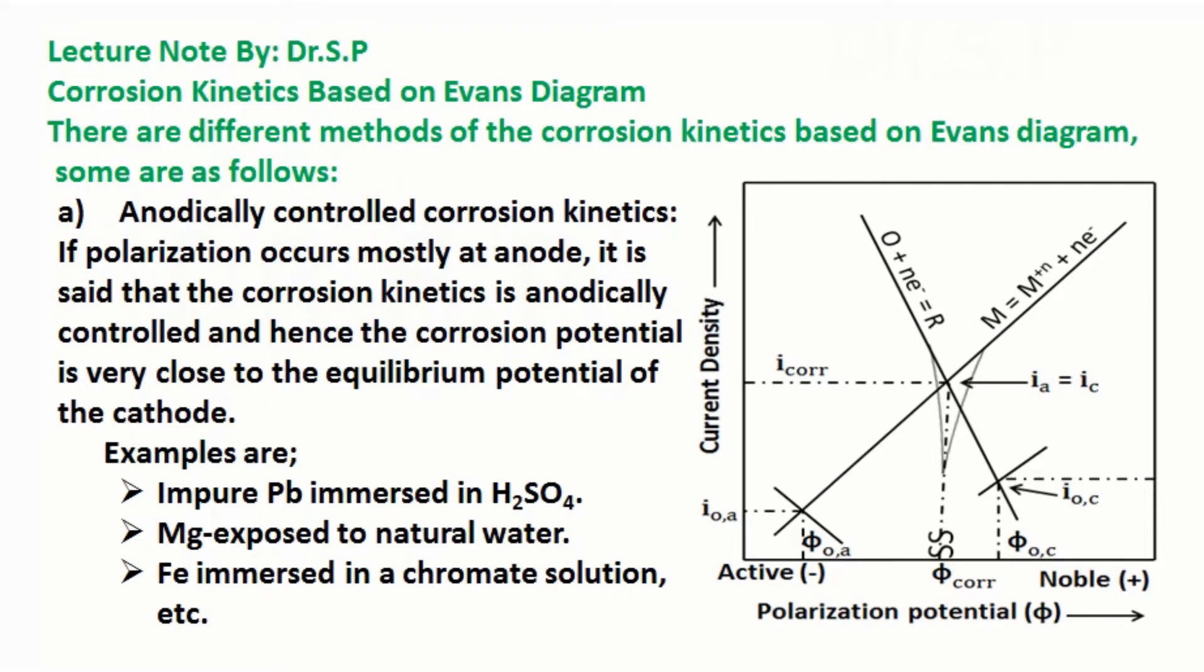Anodically controlled corrosion kinetics: If polarization occurs mostly at anode, it is said that the corrosion kinetics is anodically controlled and hence the corrosion potential is very close to the equilibrium potential of the cathode.